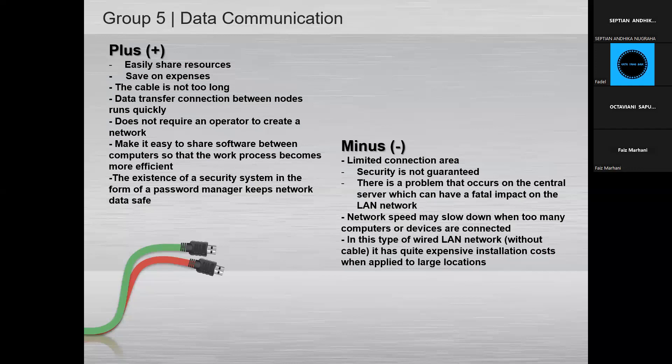Disadvantages of LAN: first, limited connection area — usually only used in one building, for example schools and offices; second, security is not guaranteed because it is password-based; third, a problem that occurs on the central server can have a fatal impact on the LAN network so that connected computers may experience interruption; fourth, networks with many nodes may slow down when too many computers or devices are connected; and the last, wireline or wireless networks have quite expensive installation costs when applied to large locations.